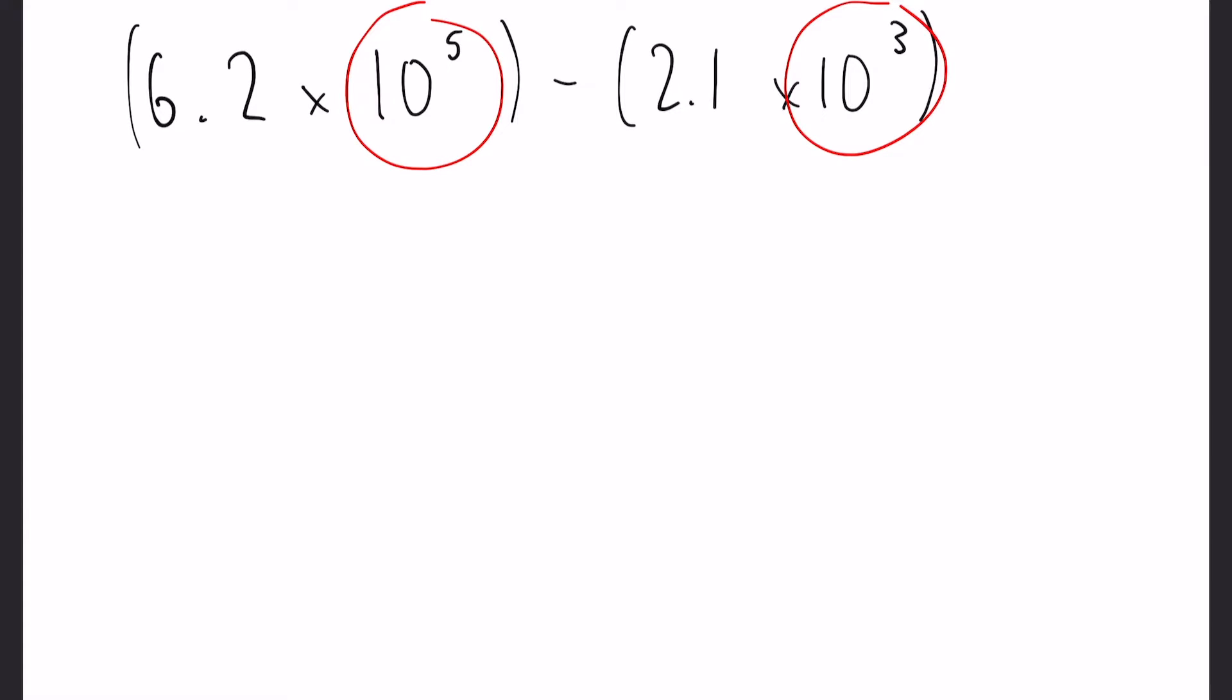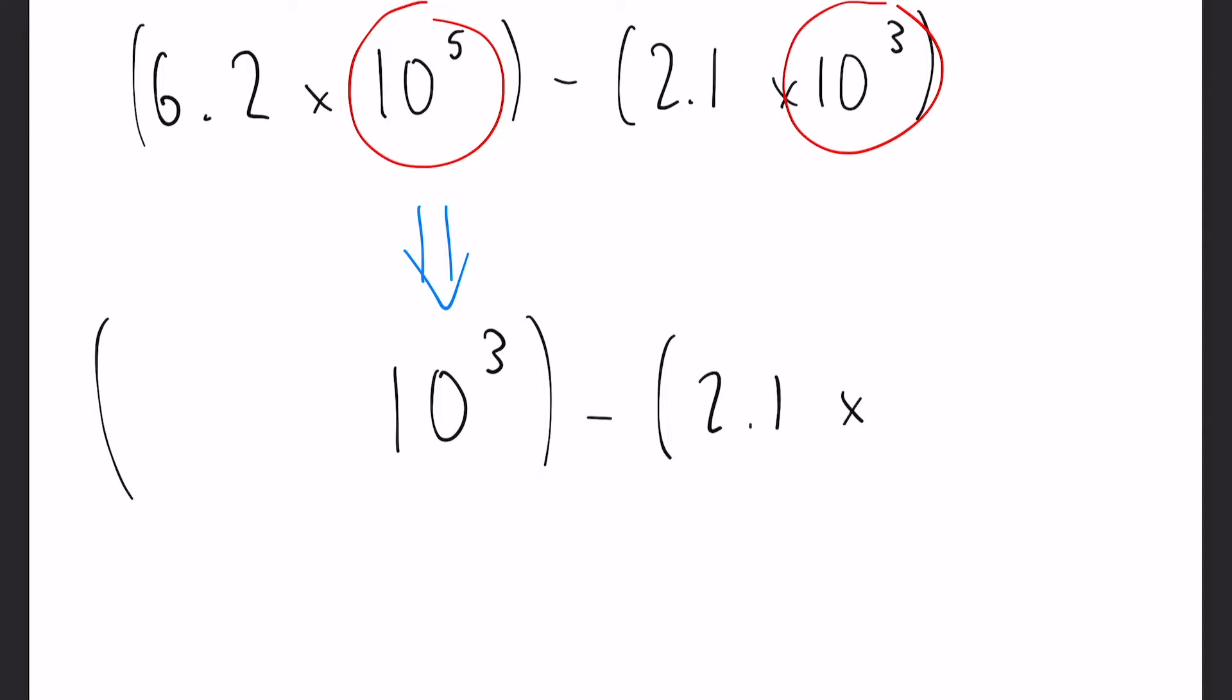So in this case we're going to bring this 10 to the 5 down to 10 to the 3. Okay, so if we write the rest of this out here: 2.1 times 10 to the 3.